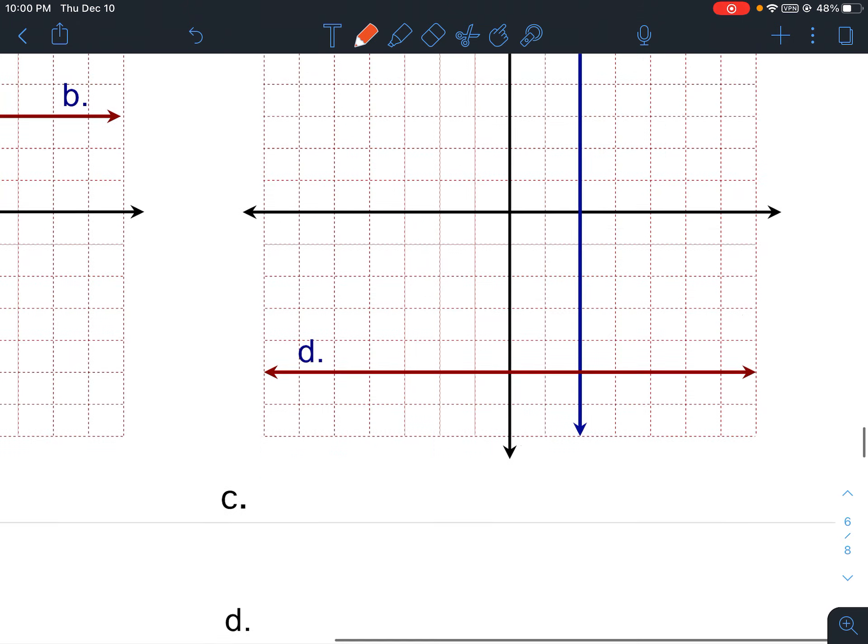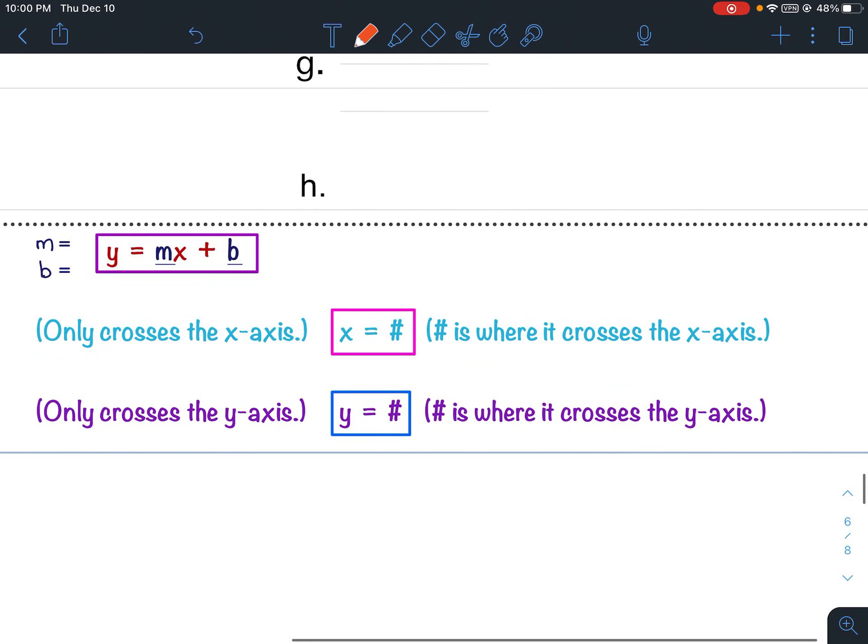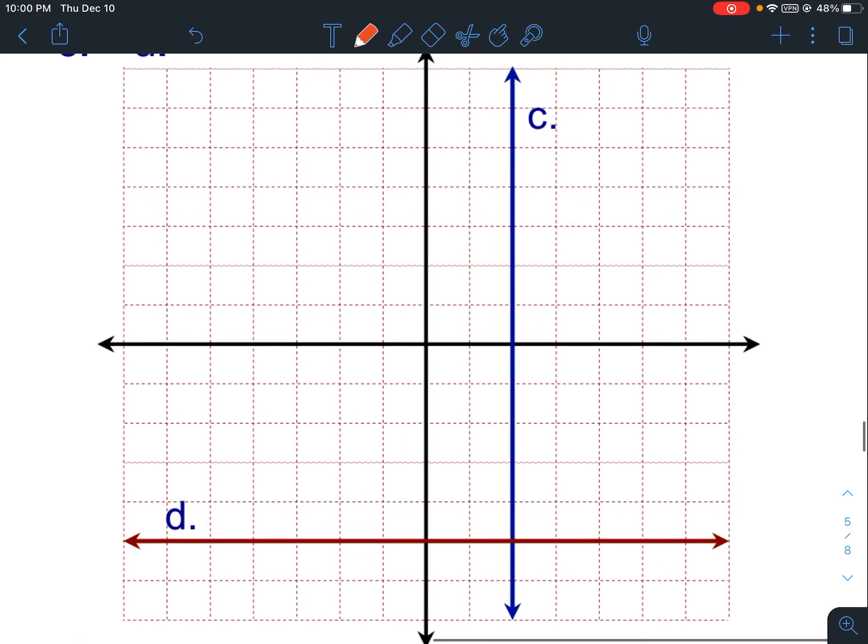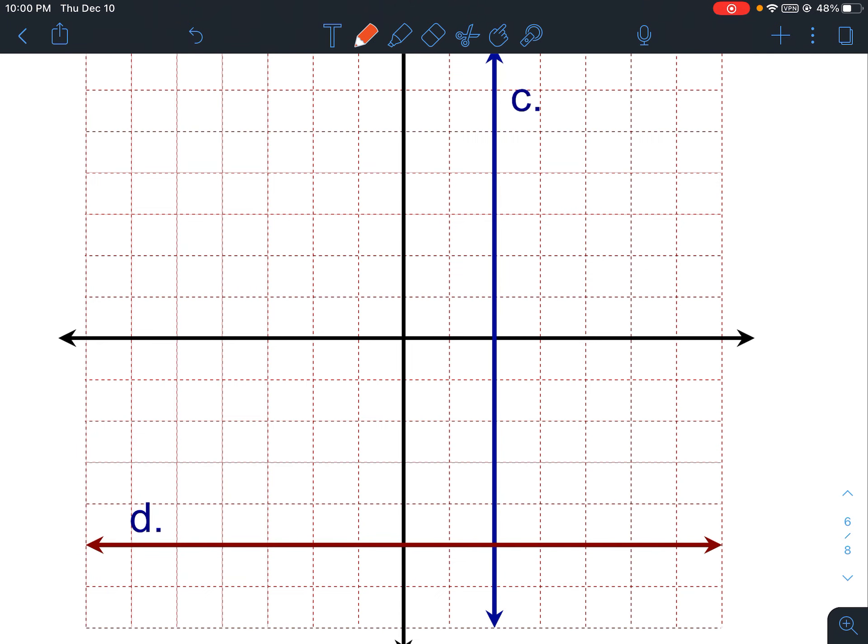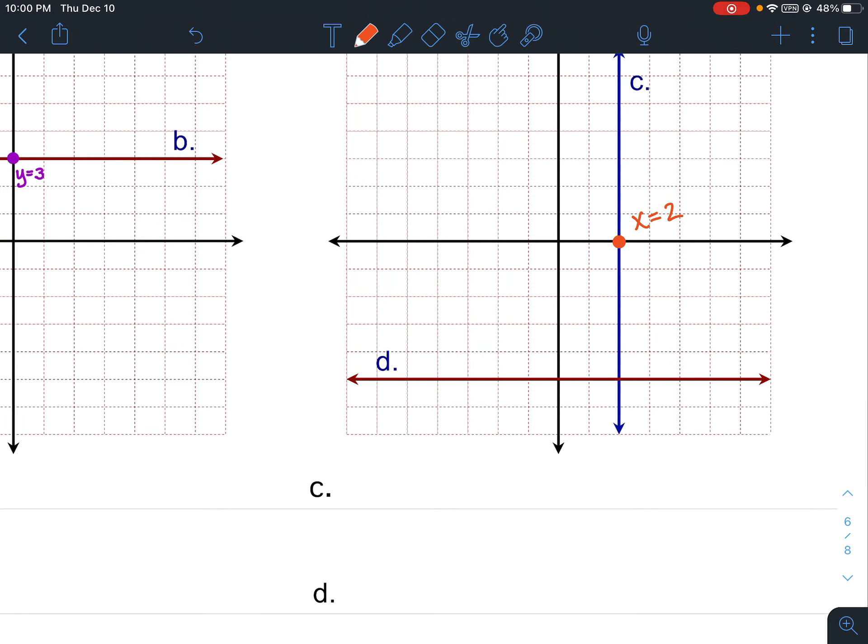C is a vertical line. Vertical lines only cross the x-axis and look like x equals a number. So if I go back up to C, the only thing you need to do is put a point where it crosses the x-axis. Where does it cross? Here's the origin. It crosses at 1, 2. So again, 1, 2. x equals 2. And that's it. Your equation for C is x equals 2.